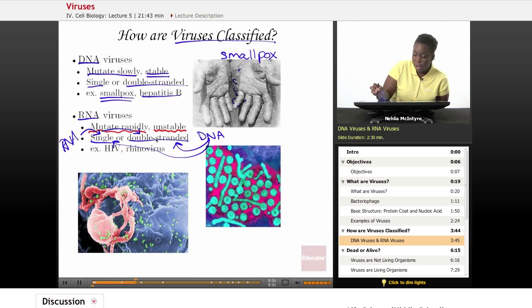Then we have the RNA viruses, such as HIV and rhinovirus. Here's a picture actually of the HIV virus taken by an electron microscope, so you can see all the details, and you can see that this virus has attached to this cell right here, because it wants to infect that cell and take it over.